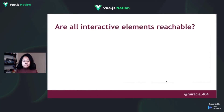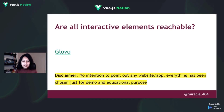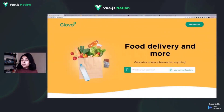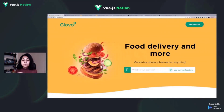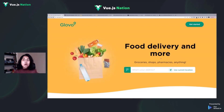The first thing to test when using a keyboard is interactivity — are all the interactive elements reachable on a website? For today's example, I'm using Glovo (as a disclaimer, it's just for demo purposes). Interactive elements include buttons, form elements, anchors, and so on. If someone is using just a keyboard, they'll use tab and arrow keys to navigate.